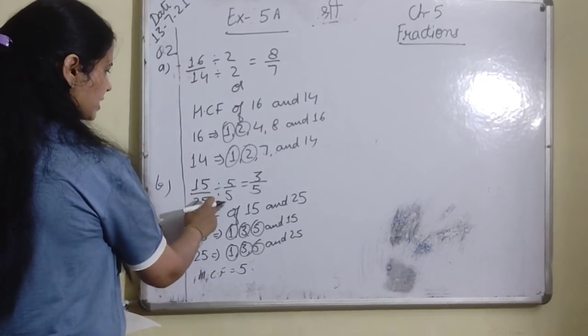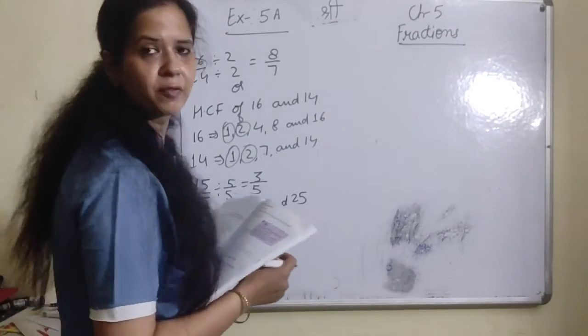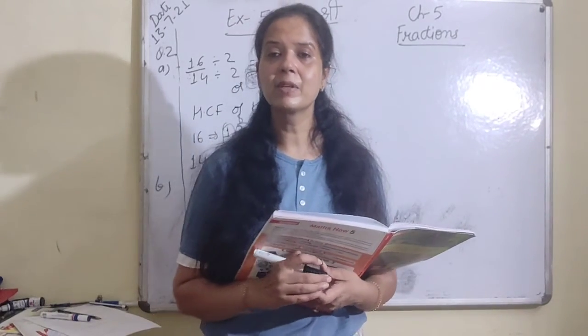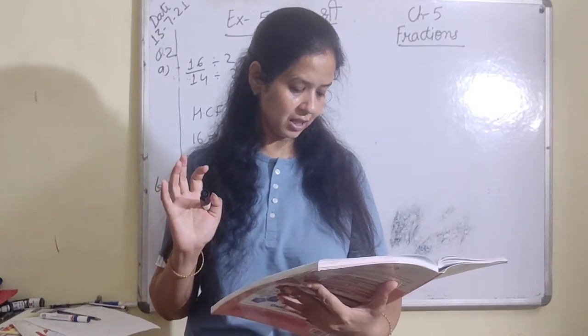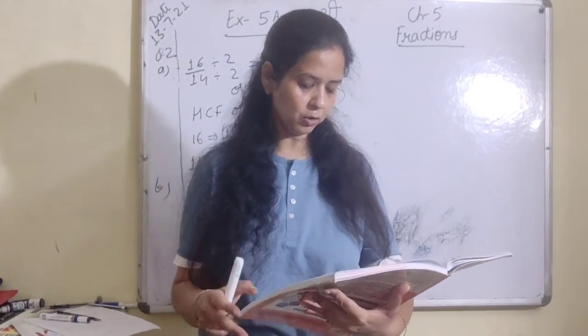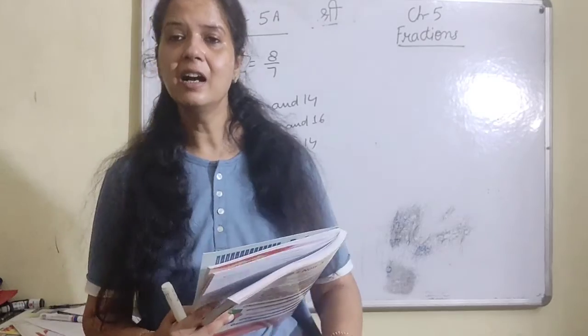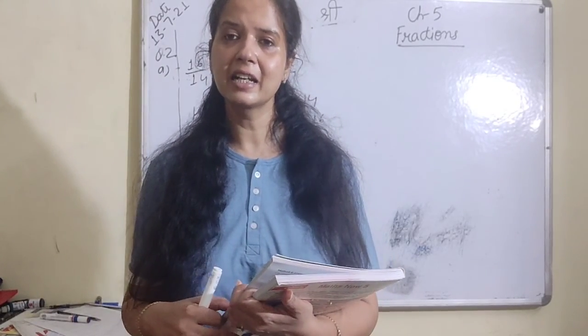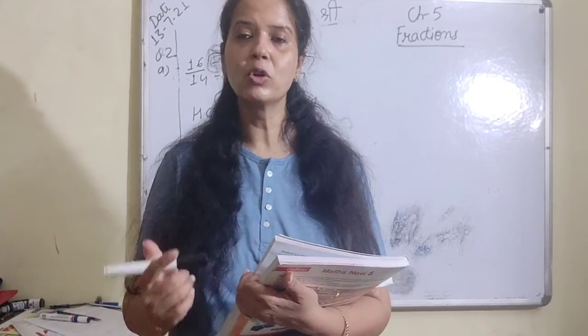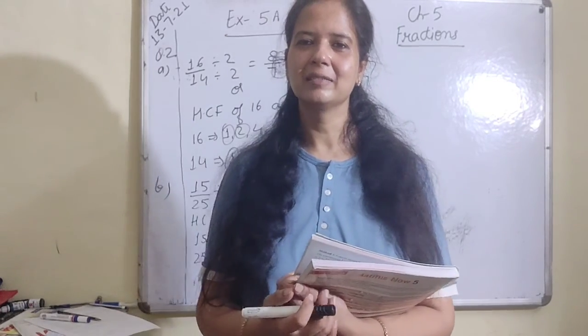15 and 25 are divided by 5. The answer is 3 upon 5. This is what we have done in today's video. Finally, complete your work in your fair notebook and do the revision again and again so that the concept will be more clear in your mind. Thank you, have a wonderful day.